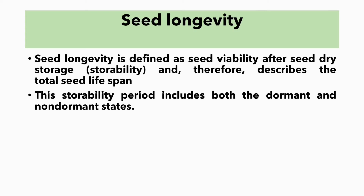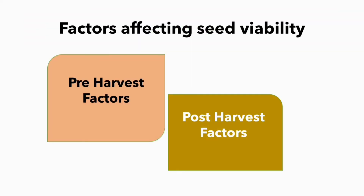Seed longevity is defined as seed viability after seed dry storage — that is, seed storability — and it also describes the total seed lifespan. The storability period includes both the dormant and non-dormant states. There are two factors affecting seed viability: pre-harvest factors and post-harvest factors.